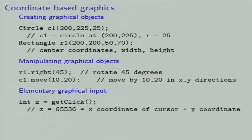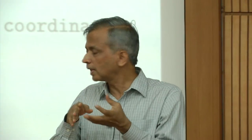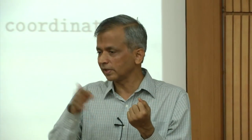This is something like lecture 4. An elementary graphical input facility is also provided. You can say 'int z equals getClick'. It waits for the user to click on the screen, and whatever coordinates x, y the user clicks at, 65536 times x plus y is sent back as z. To get the x coordinate, do integer division by 65536; to get the y coordinate, do z modulo 65536. So basic graphical input has been established.